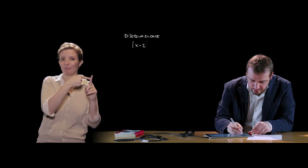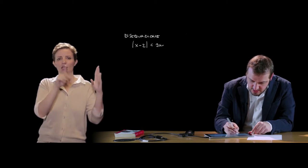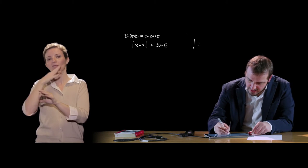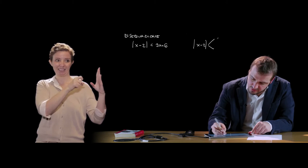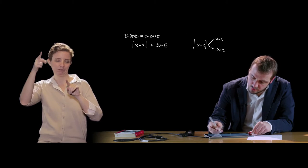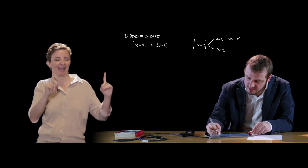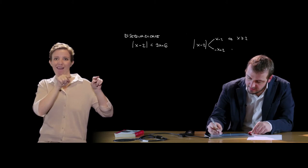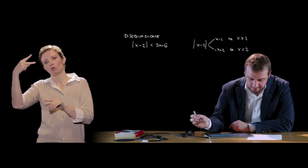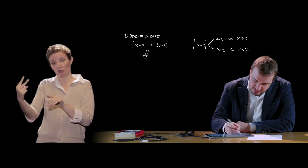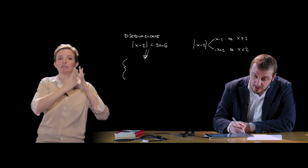We now look similarly at the application to an inequality containing absolute value. We reason in exactly the same way: we must eliminate the absolute value taking the sign into account. Let's go directly to an example: |x - 2| < 3x + 6. We know the modulus of x - 2 can give us x - 2 or -x + 2 depending on the sign of its argument.